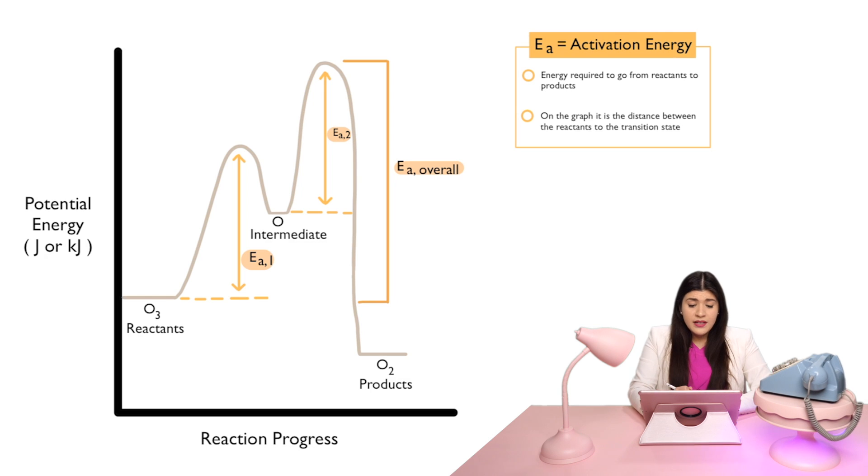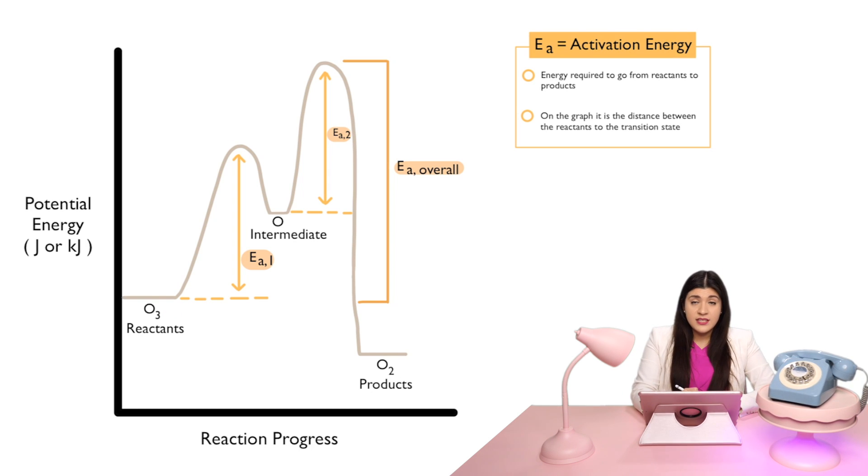And then we have another one, because we have another transition state or activated complex. Here I see this is once again now going to go from the next point that I have. So, it's no longer the reactants to the transition state. It's now the intermediate to the transition state. So, that's our second activation energy.